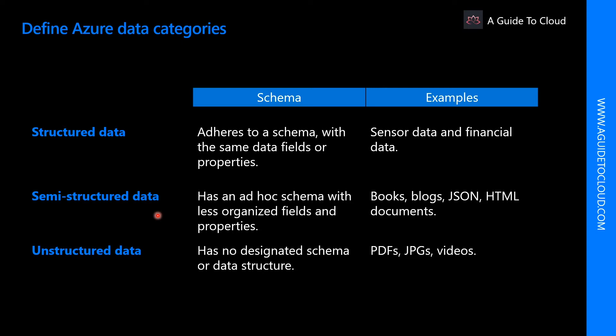Semi-structured data is less organized than structured data. It is not stored in a relational format, meaning the fields do not neatly fit into tables, rows, and columns. Semi-structured data contains tags that make the organization and hierarchy of the data apparent. It is also known as non-relational or NoSQL data. Examples of semi-structured data include books, blogs, and HTML documents.